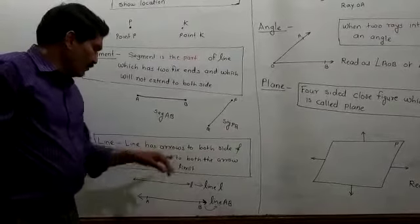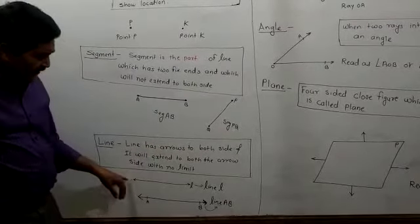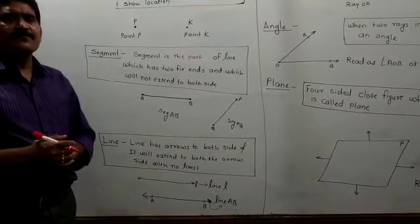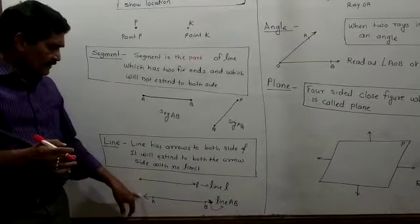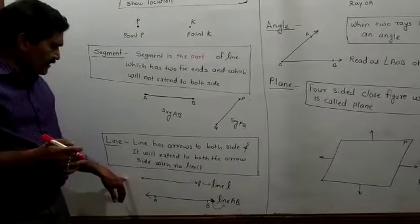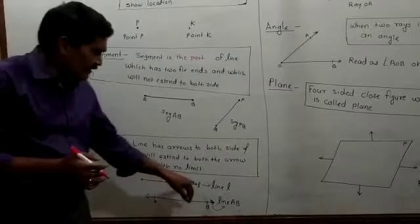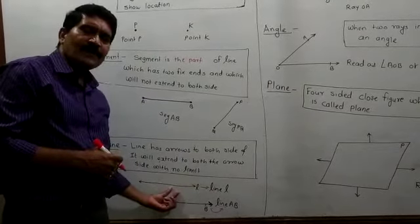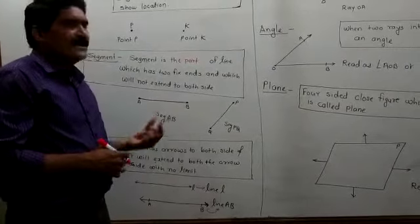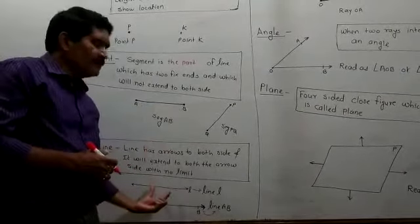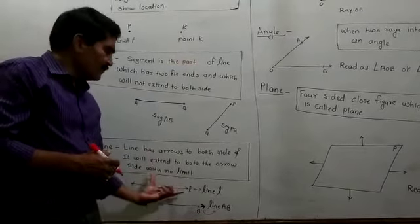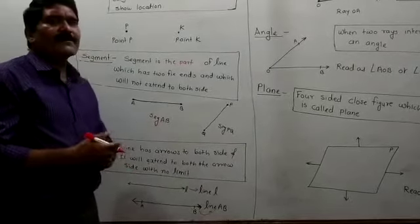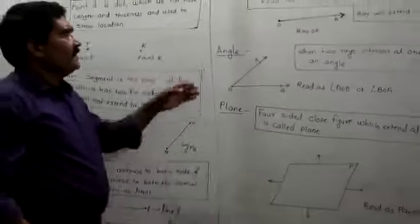The definition of a line: a line has arrows at both sides and it will extend to both sides with no limit. The arrows indicate that this line continuously extends in both directions with no limit. This line will increase and increase continuously to both sides. A segment has limitations because it has two fixed ends, while a line has two arrow ends and extends continuously to both sides without limit.